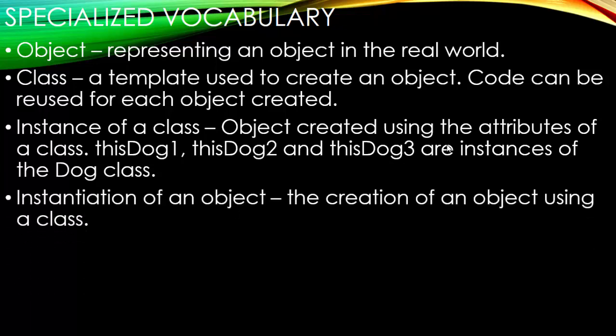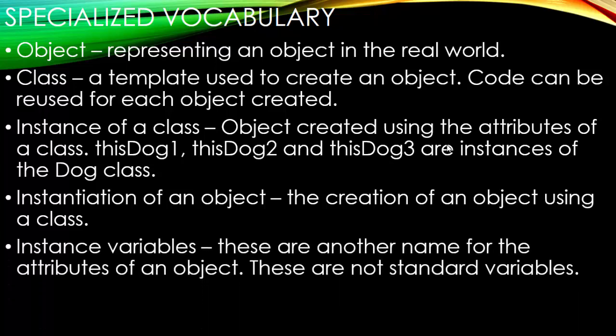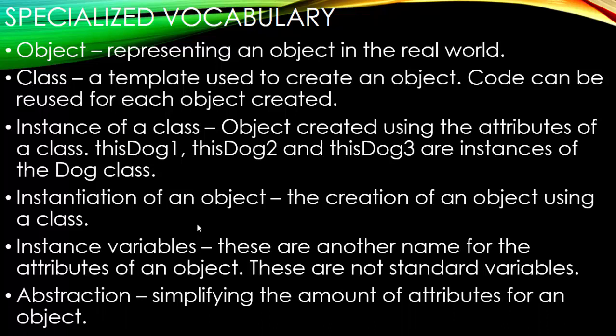Instantiation of an object may be something else you hear. This is a creation of an object using a class. You may also hear what's called instance variables. Now, these are another name for the attributes of an object. They're not standard variables. You have instance variables, which refer to the instance of a class. So an object using attributes. And the last one you'll hear is abstraction.